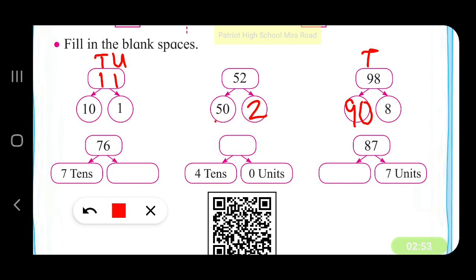Here, 6 is in units place, so you have 6 units, that is 6. 4 tens - let us put 4 in the tens place and 0 units in the units place. 87: 8 is in the tens place and 7 in the units place, so 8 tens is 80, and 7 units.